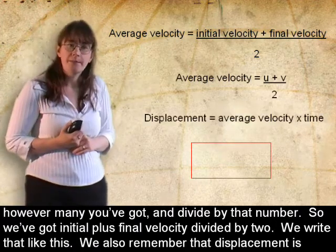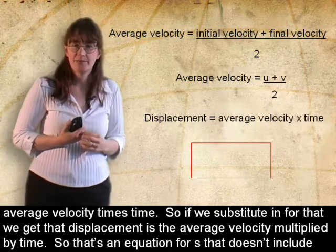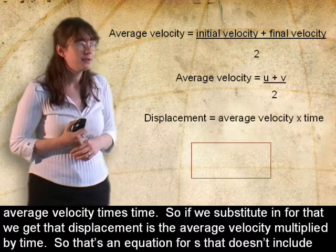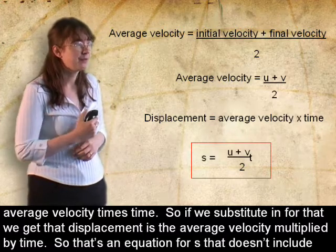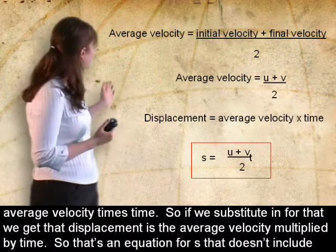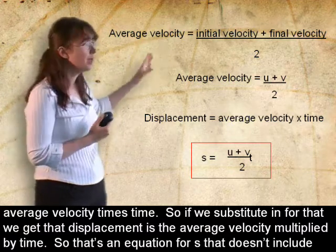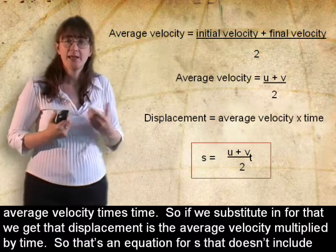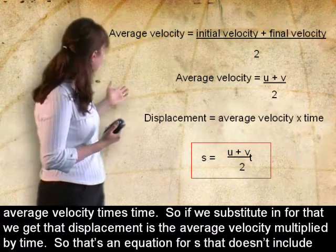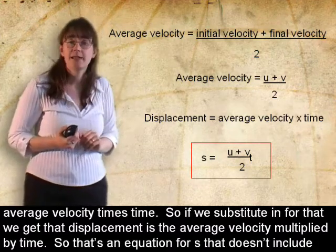We also remember that displacement is average velocity times time. So if we substitute in for that, we get that displacement is the average velocity, the u plus v divided by 2, multiplied by time. So that's an equation for s which doesn't include the acceleration.